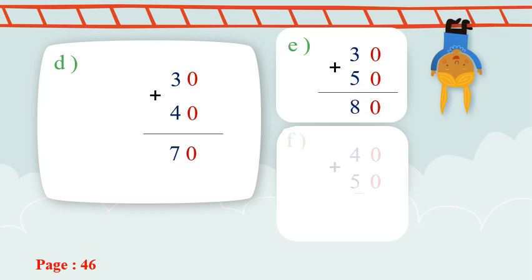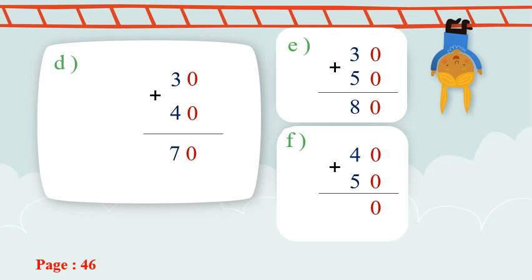Help me with number F! Ones plus ones, tens plus tens. Zero plus zero equals zero. Four plus five — five on my mind, four on my hand — after five: six, seven, eight, nine. The answer will be ninety. Excellent, Primary One!